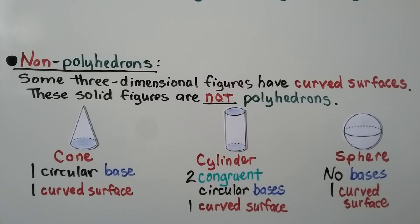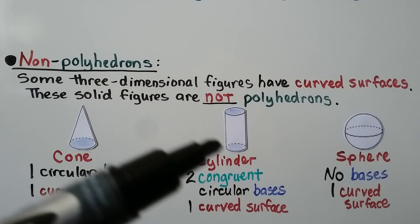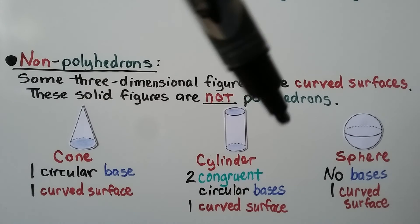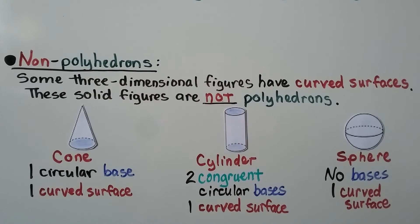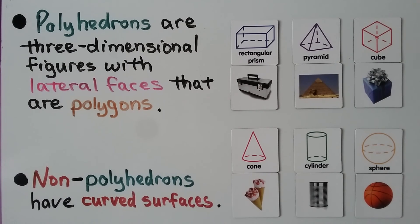Non-polyhedrons: there are some three-dimensional figures that have curved surfaces — these are non-polyhedrons. We have a cone, which has a circular base and one curved surface going around. A cylinder has two congruent circular bases and one curved surface going around. And a sphere has no bases — it's just one curved surface. These are not polyhedrons, but they are three-dimensional figures. They just have curved surfaces.